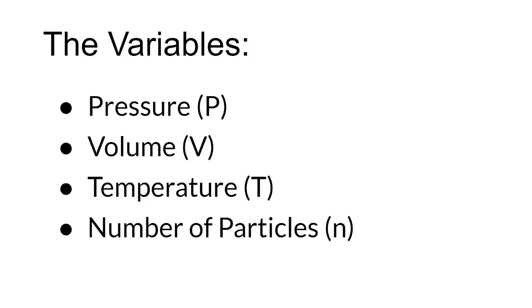And then we have number of particles — how many gas particles are there? Obviously, if there are more gas particles, they're going to take up more space, or there'll be more collisions, and so on. We represent them with letters: pressure is P, V is volume, T is temperature, and number of particles is represented as N. There's a reason why P, V, and T are capitalized and N isn't, but we're not going to worry too much about that.